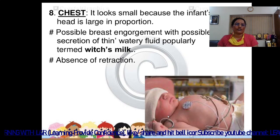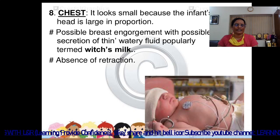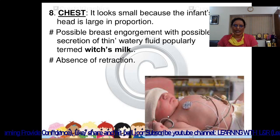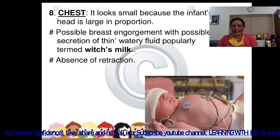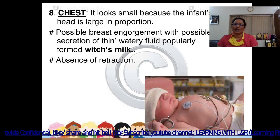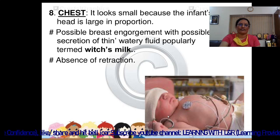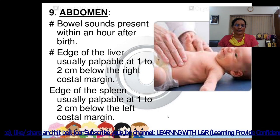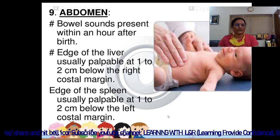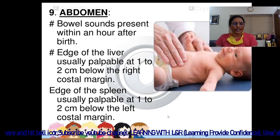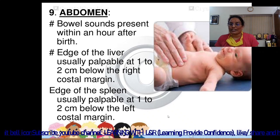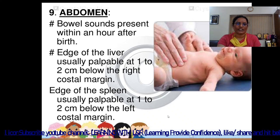Chest looks small because the infant's head is large in proportion. Possible breast engorgement with possible secretion of thin watery fluid, popularly termed witch milk, mostly appearing in girl children due to the hormonal effect of the mother. Abdomen: bowel sounds are present within an hour after birth. The edge of the liver is usually palpable 1 to 2 cm below the right costal margin, and the edge of the spleen is usually palpable 1 to 2 cm below the left costal margin.